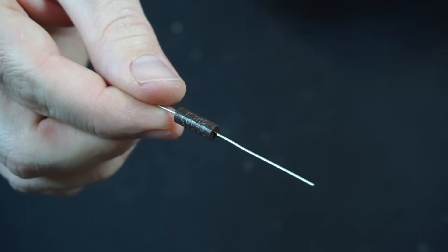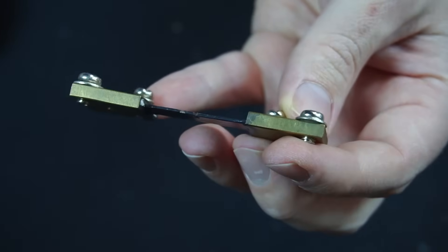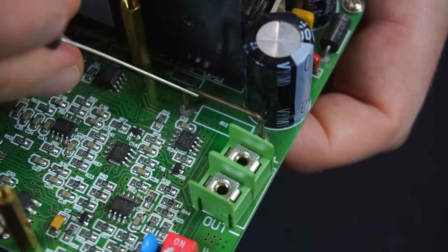But what does a shunt look like exactly? Well, for example, this is an axial style shunt, and this is a high current shunt rated to handle up to 50 amps.